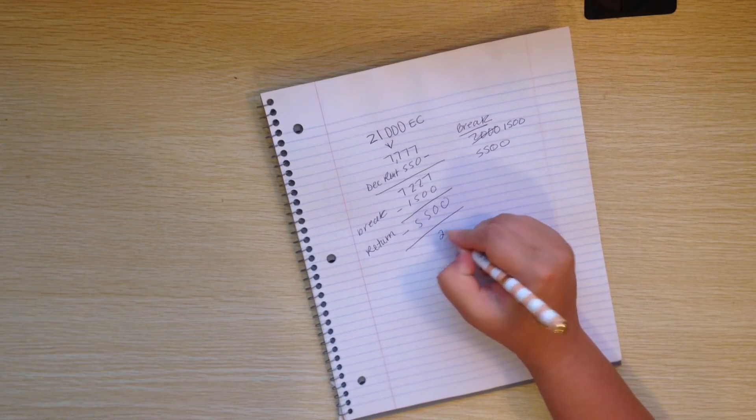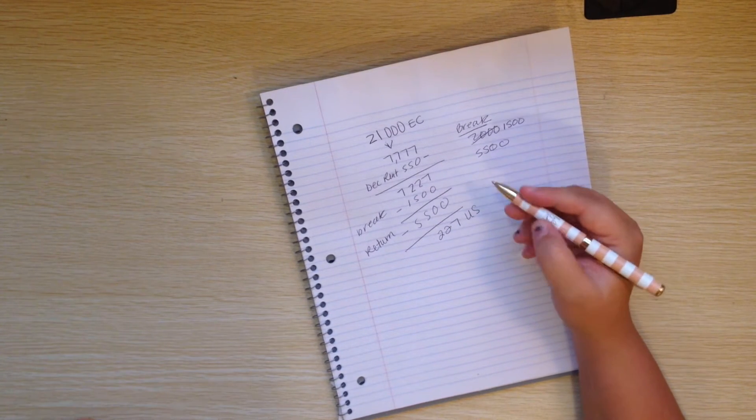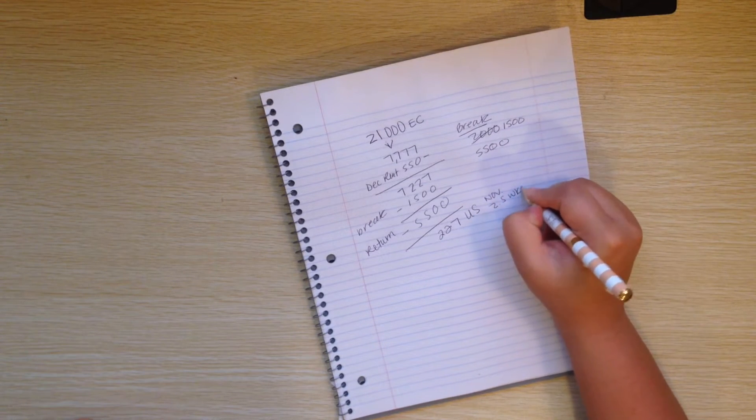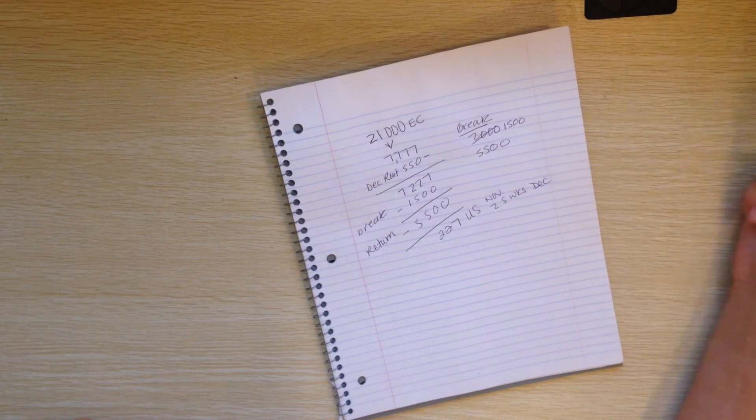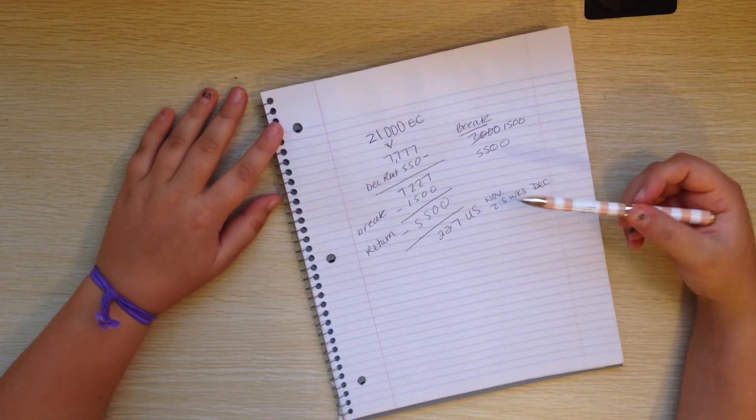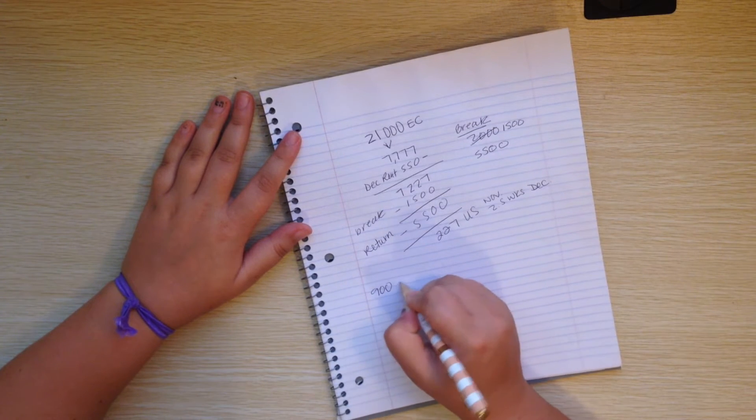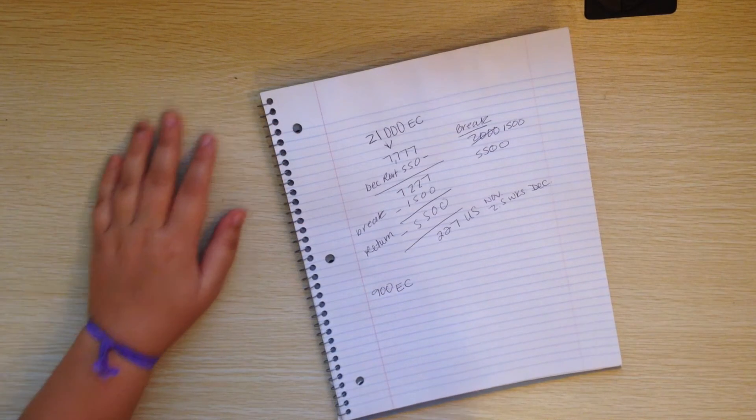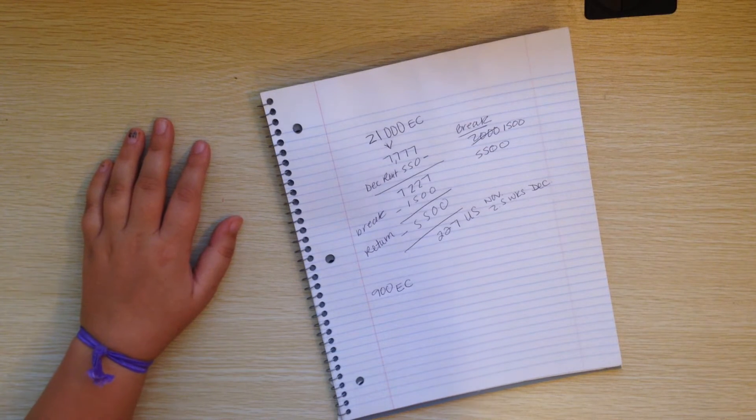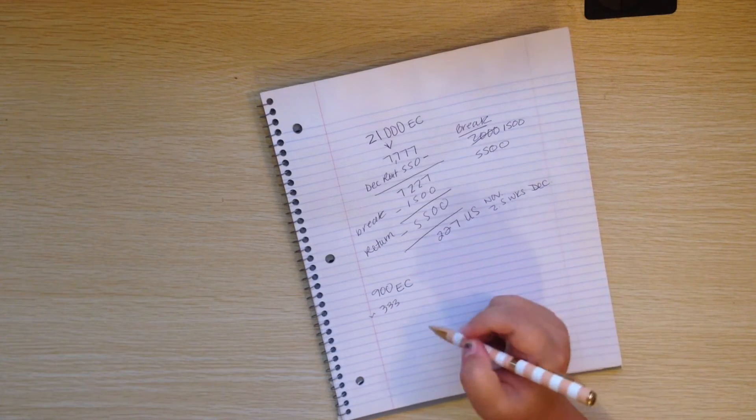And that leaves me with $227 U.S. basically for November and then like 2.5 weeks of December. So I have that and then I also have some like emergency cash in my drawer which is $900. It's not U.S. so just since I'm doing things in U.S. right now let me convert it. So it's about $333 U.S.